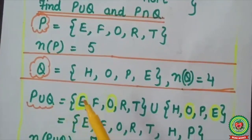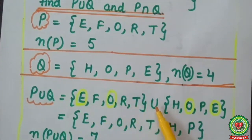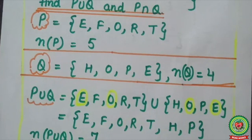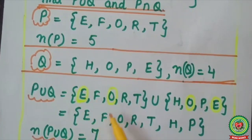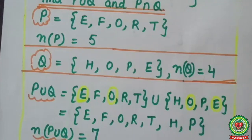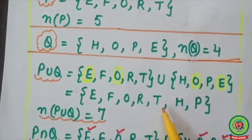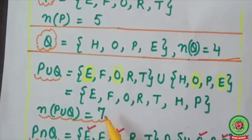For P∪Q, I write set P = {e, f, o, r, t}, then the union symbol, then set Q = {h, o, p, e}. As per the definition, P∪Q consists of all elements of P or Q without repetition. So I write P set first: e, f, o, r, t, then from Q only h and p — I will not write o and e again as they are repeated. So P∪Q = {e, f, o, r, t, h, p}, and its cardinal number is 7.